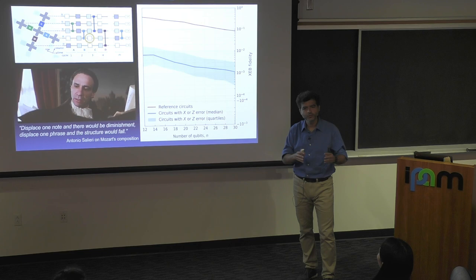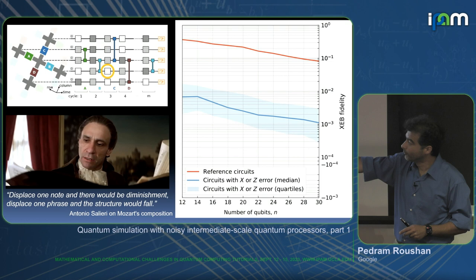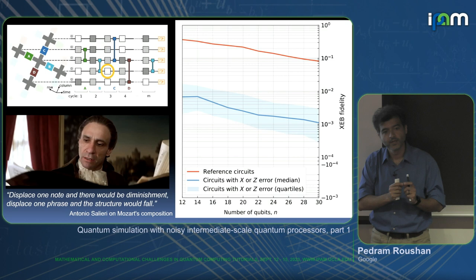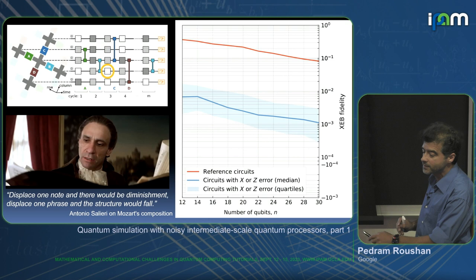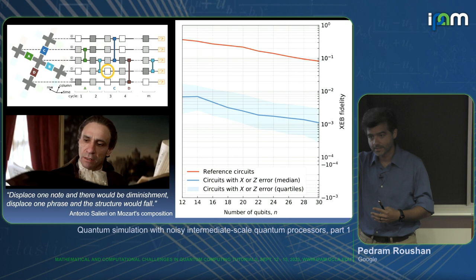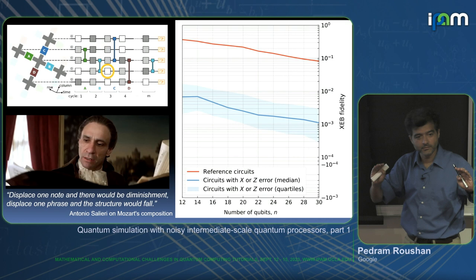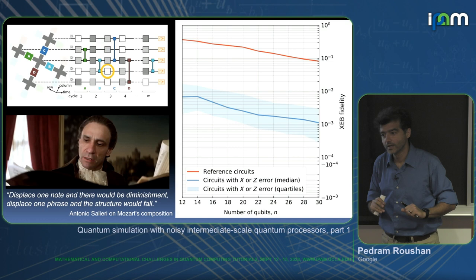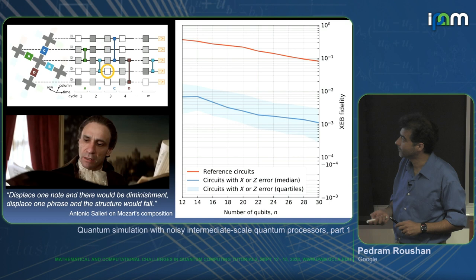I really like to show this plot — the first quantum realization of something seen in classical music. Salieri confessed that Mozart's composition is so precise that if you change one note, the whole thing falls apart. We have the same thing in our circuit. If I pick one of these single-qubit rotations and change it without telling the classical computer, the fidelity drops by two orders of magnitude. You really have to get all the way down to single-qubit gates fully sorted out to get this experiment to work — the quantum version of Mozart's composition.